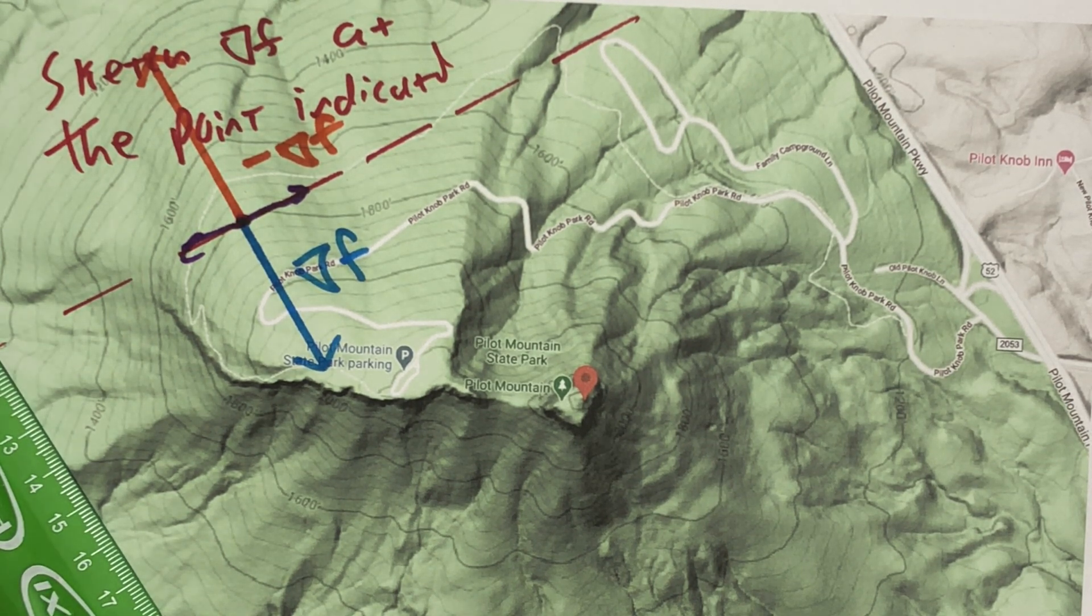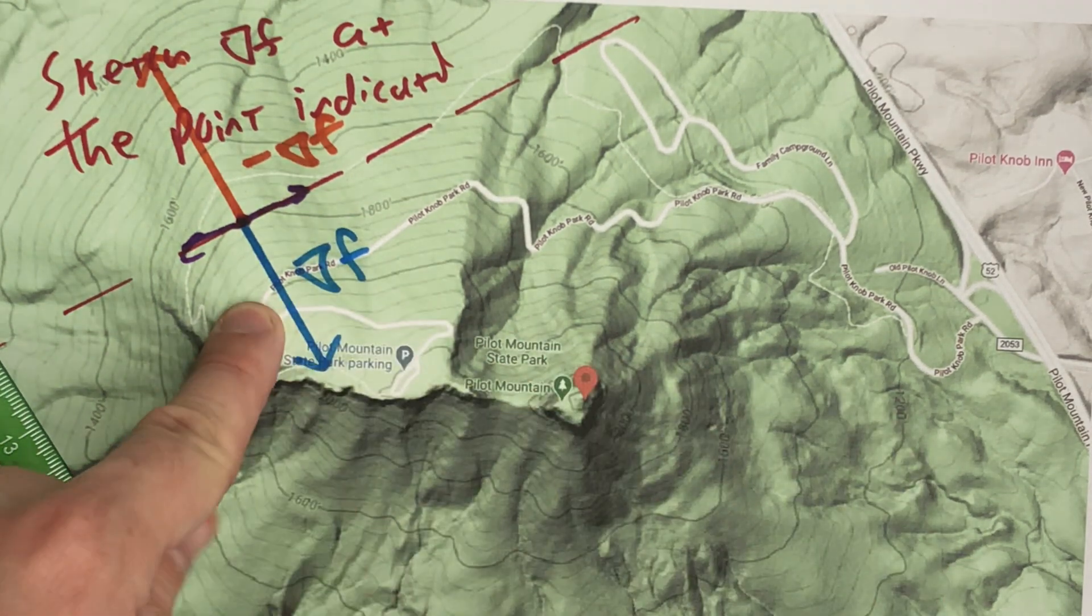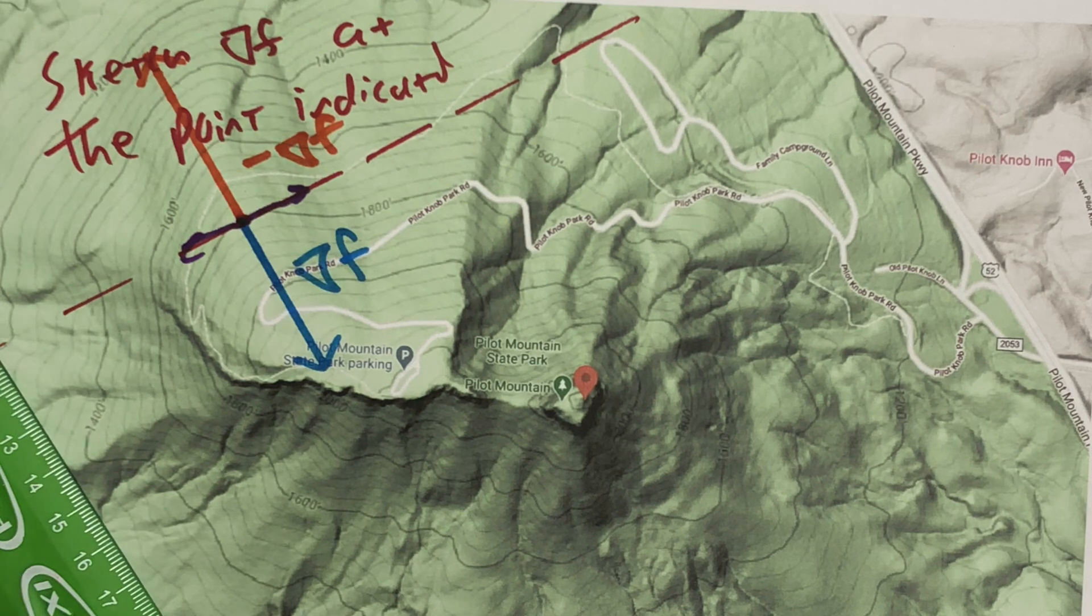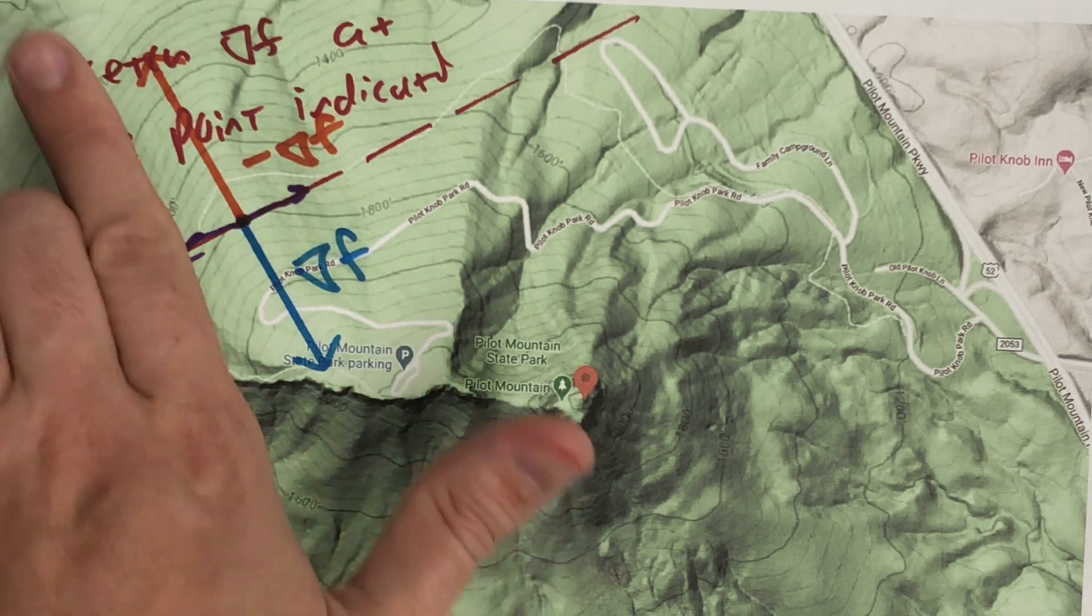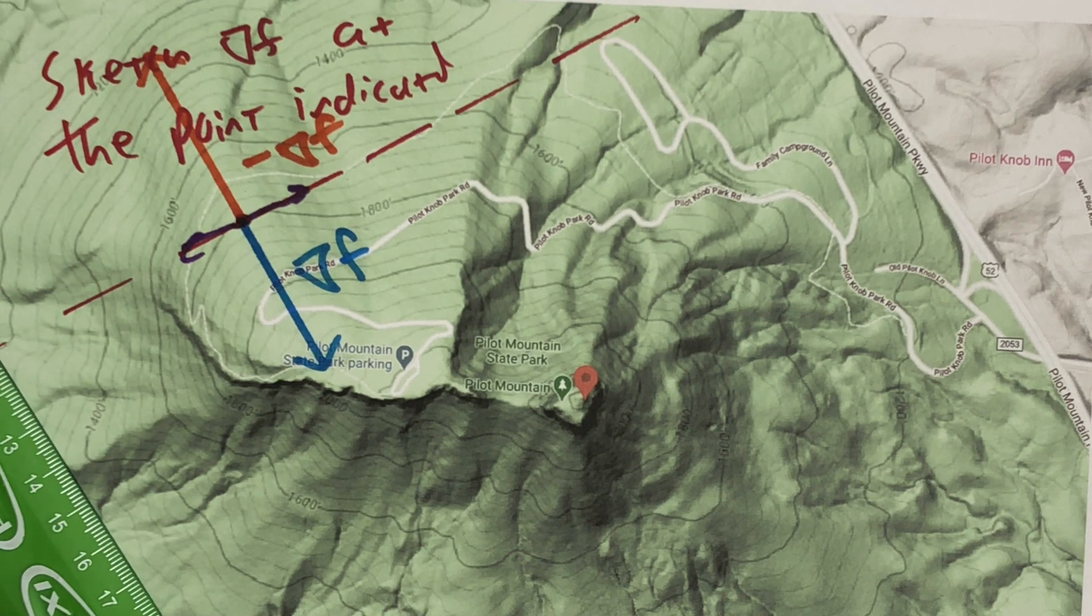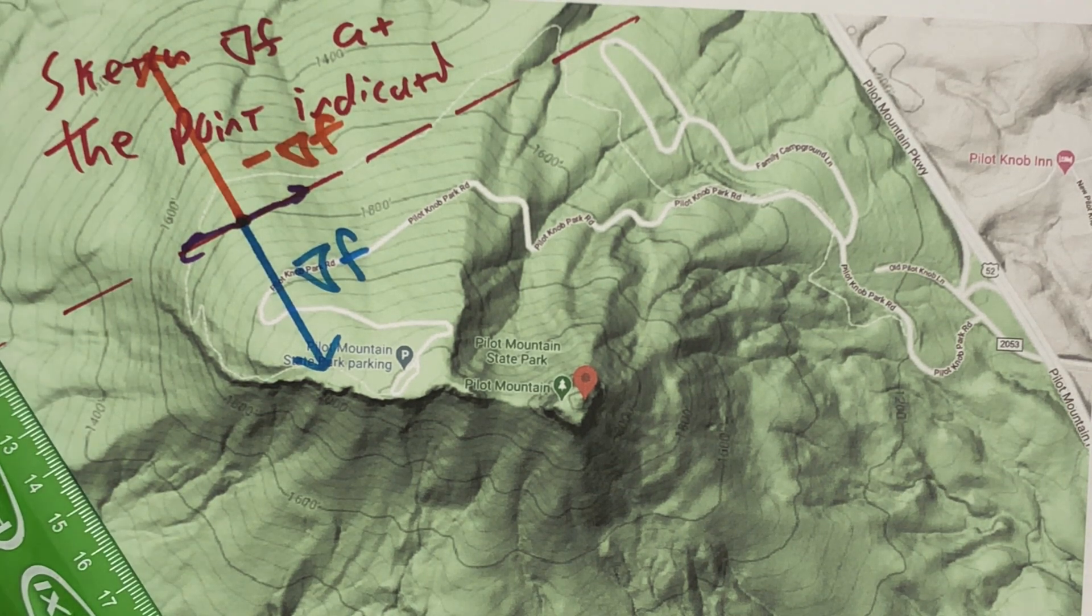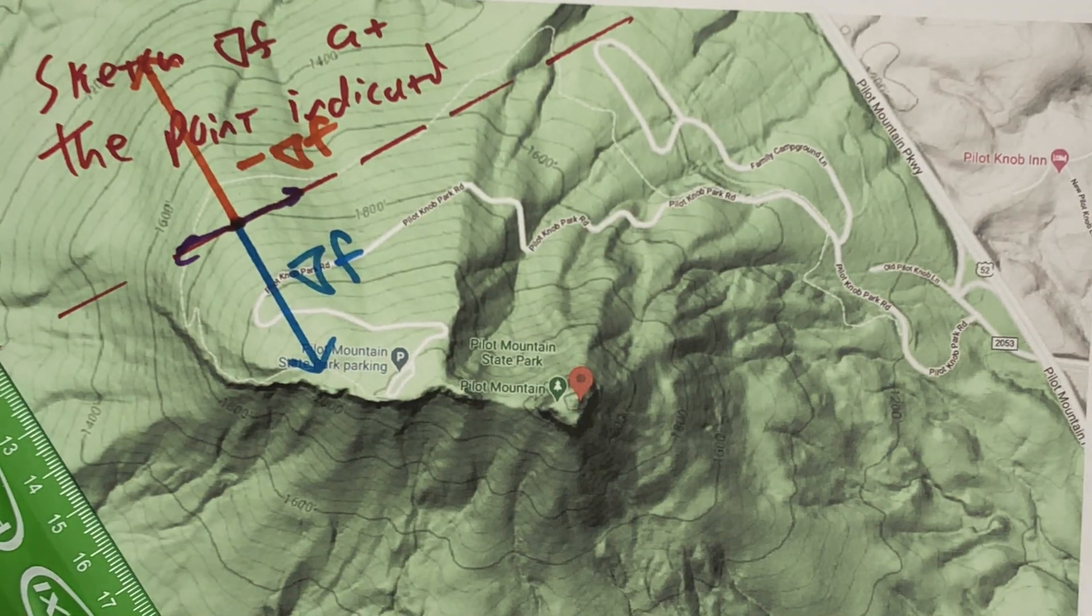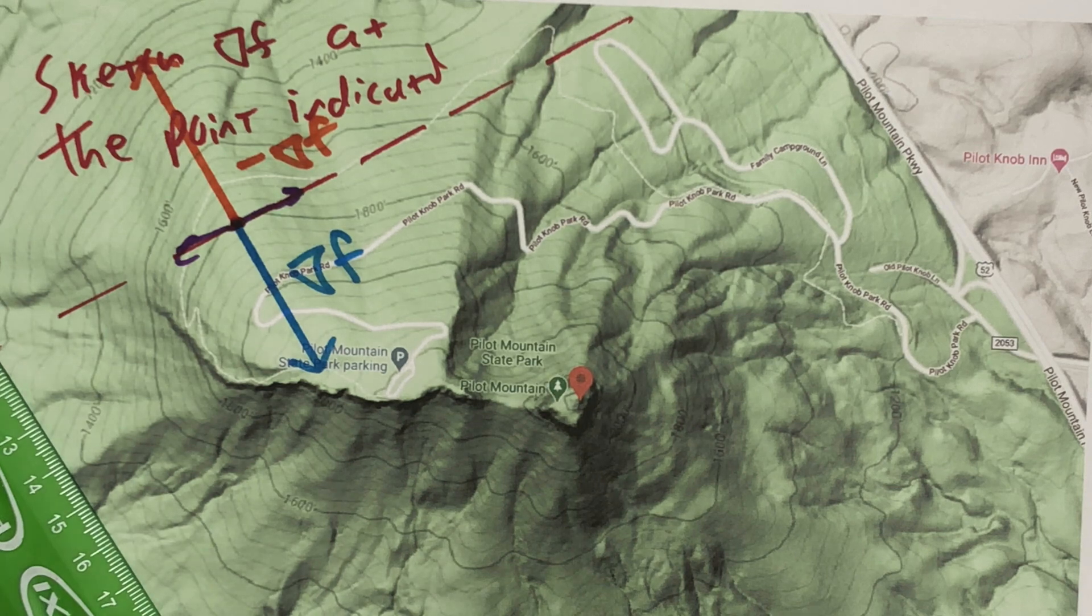So the big idea: del f is perpendicular to level curves. Del f itself points in the direction of most rapid increase. The opposite of del f points in the direction of most rapid decrease. And orthogonal to that, we have the tangent line to a level curve, which is the direction of zero change.